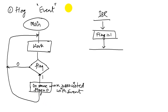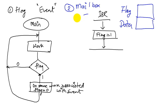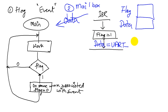We can extend the idea of a flag to incorporate passing of data through a mailbox. The mailbox has two components: the flag, just like the previous example, plus a data field. In this mailbox example, the purpose is to pass data from the interrupt service routine into the main program — for example, a UART triggered by the arrival of a data packet puts the received data into this data buffer.